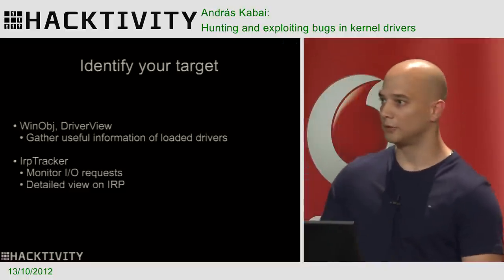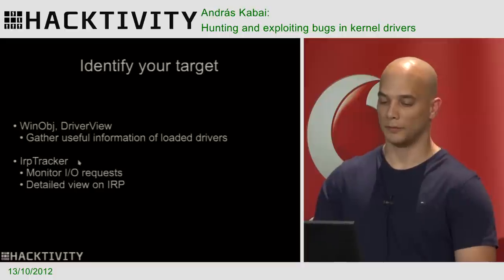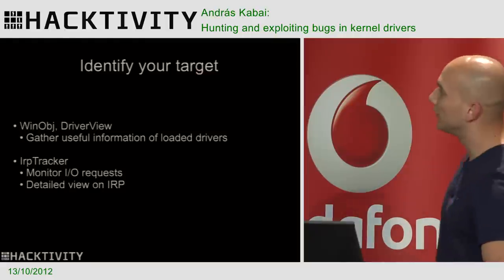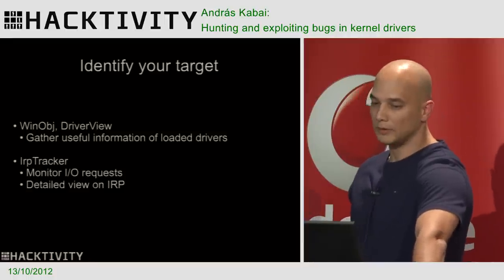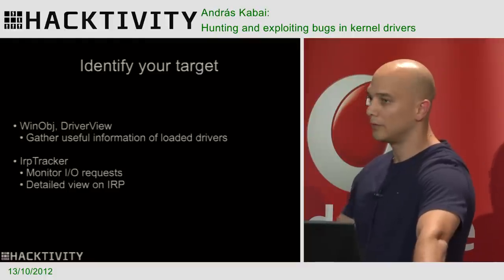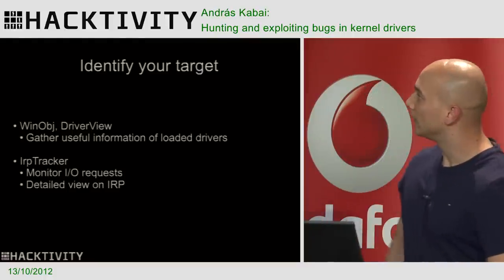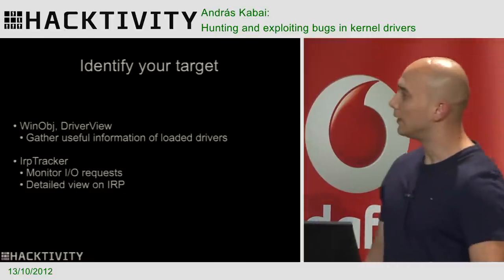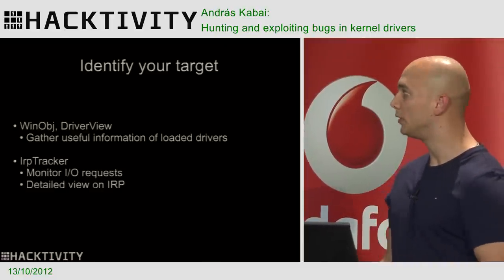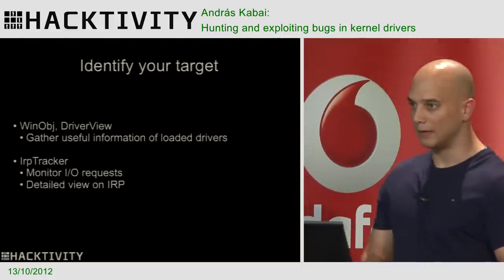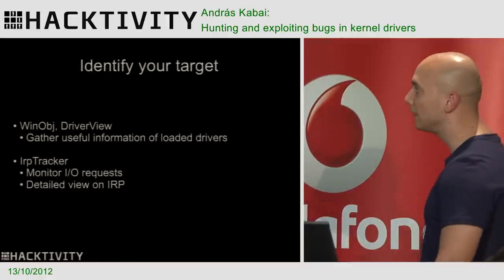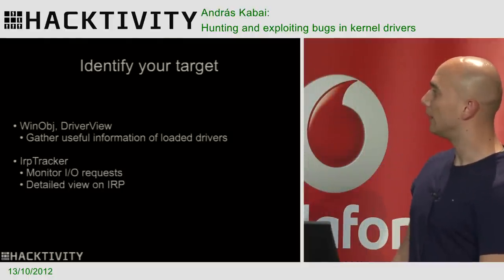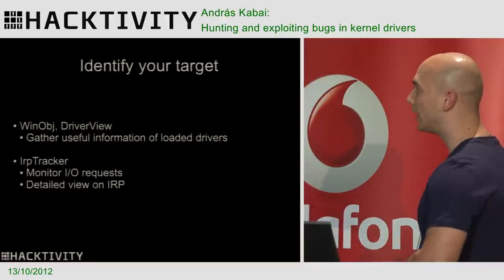To identify your target, use tools that are publicly and freely available. The two main tools are WinObject, part of the SysInternals suite, and DriverView. With these you can identify loaded drivers, their base addresses, access levels, and other important information. There is also the IRP Tracker, very useful if you don't want to reverse-engineer the whole driver but want to understand its communication. With IRP Tracker you can capture IRP packets and see a detailed view — exporting IOCTL codes, recognizing buffer sizes, and so on.